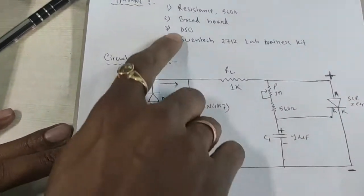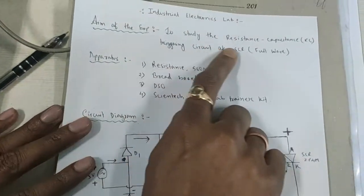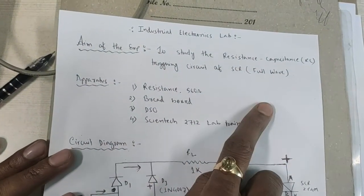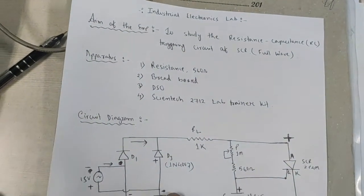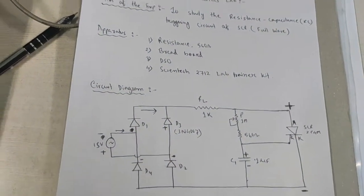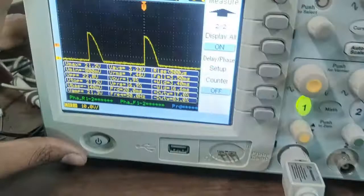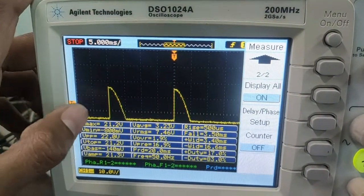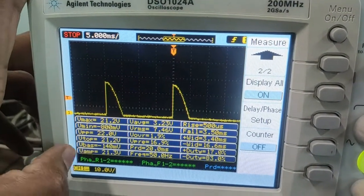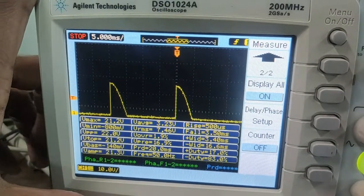So, this is our RC full wave triggering using SCR. See here. This is the output. You can trace it down. Thank you.